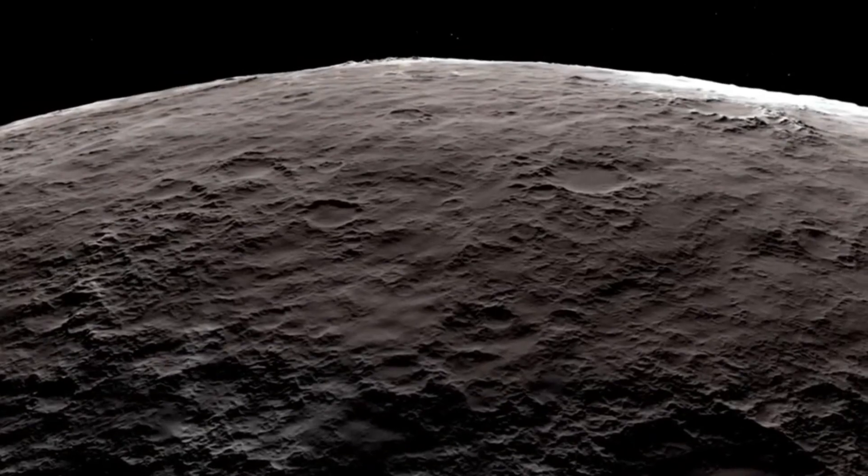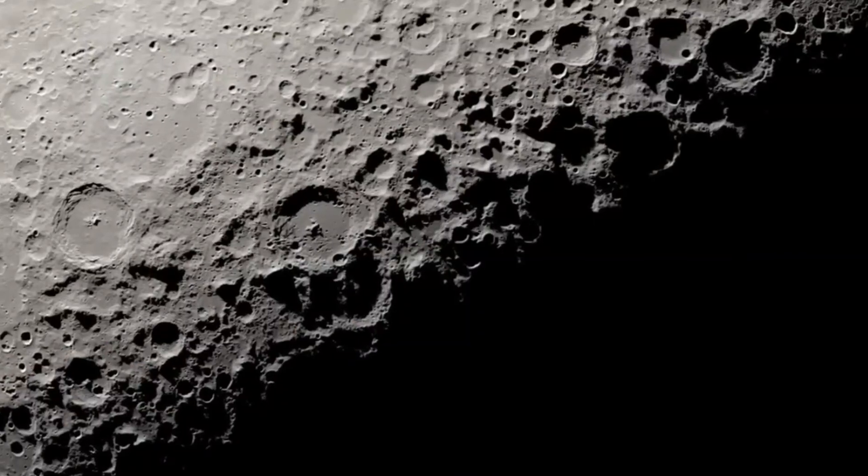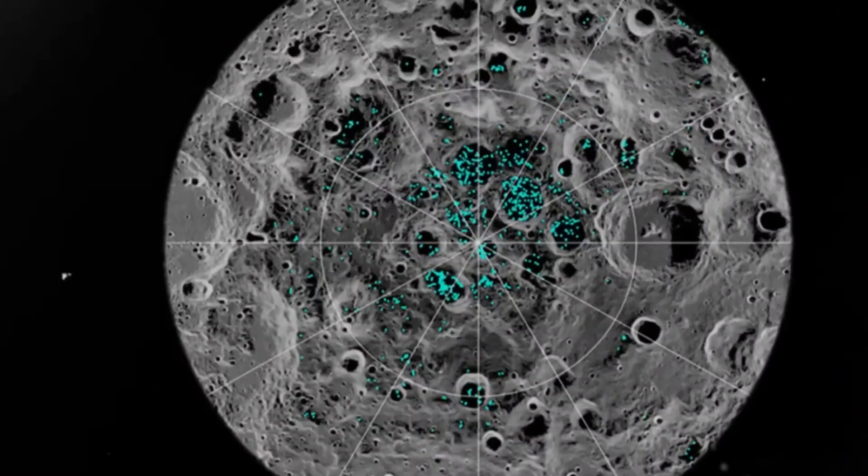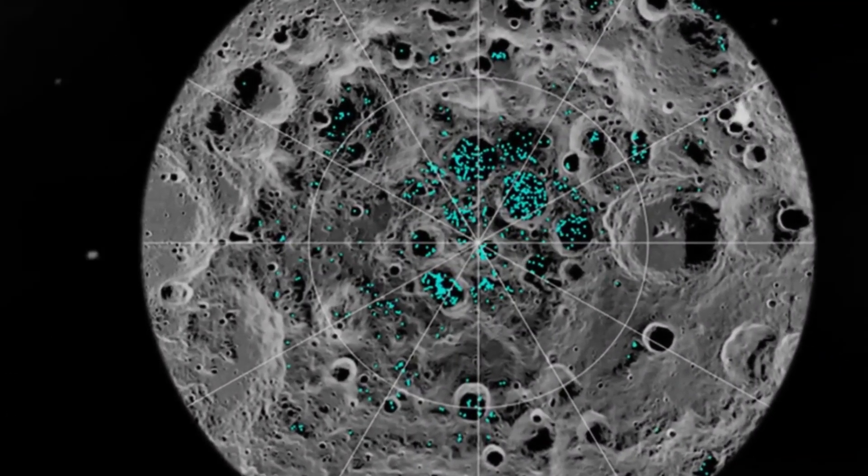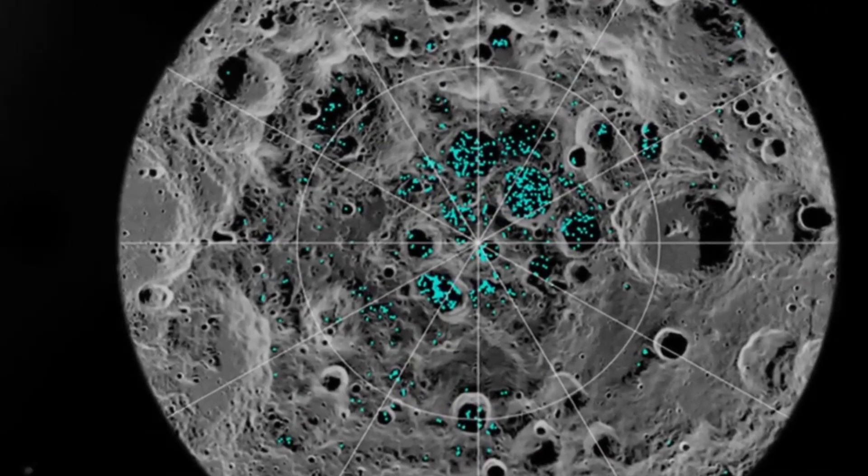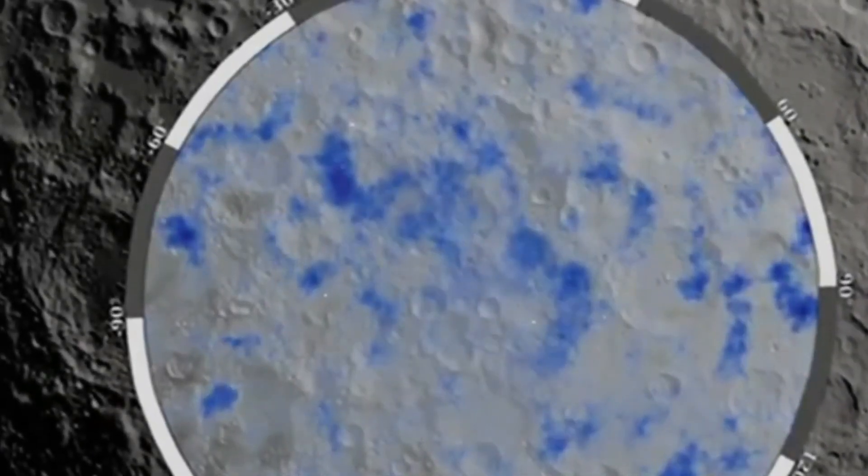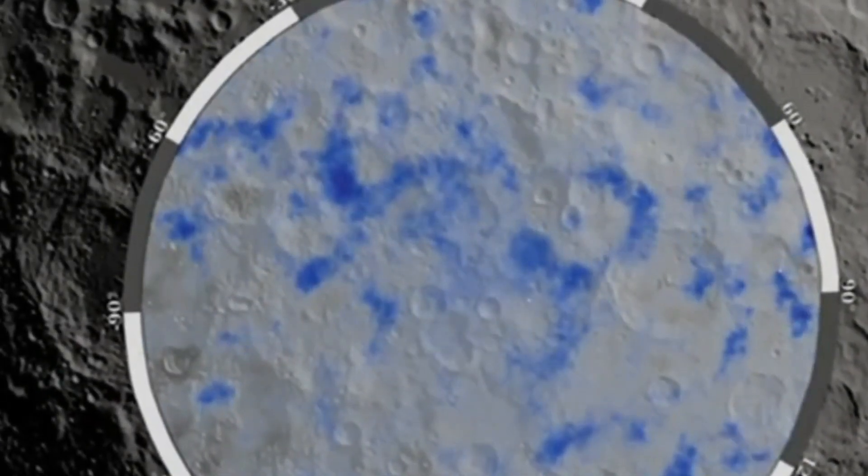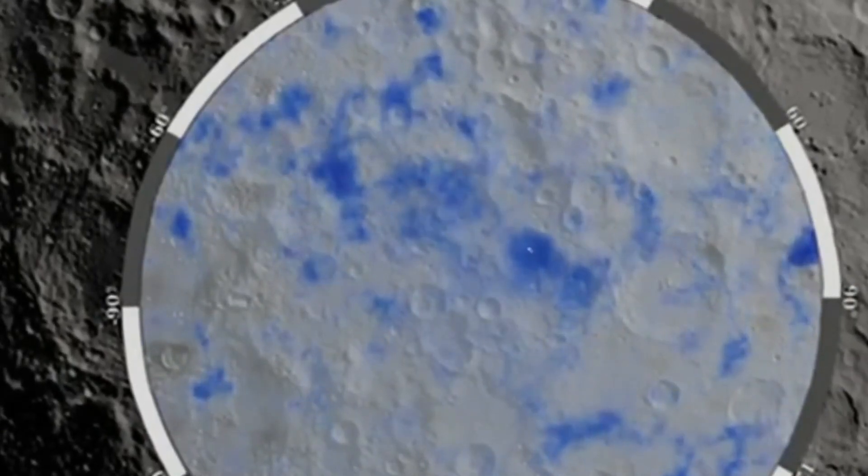But why did India choose to land near the lunar south pole? What makes this region so special? The answer is water. Water is one of the most essential and valuable resources for life and space exploration. And the lunar south pole is believed to have abundant water ice deposits in some of the permanently shadowed craters that never receive sunlight.